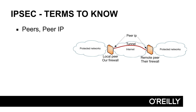The peer IPs are the two IP addresses — one on each peer — that are used to send and receive the encrypted traffic. Normally, the peer IP address is the outside IP address of the VPN tunnel, and in order for one peer to contact the other peer, the first peer needs to know the IP address of the second peer. So generally, the peer IPs need to be static.